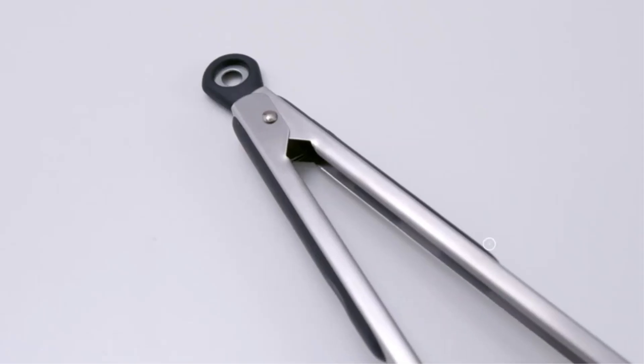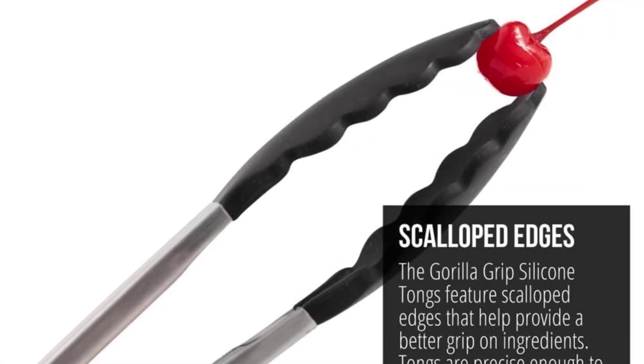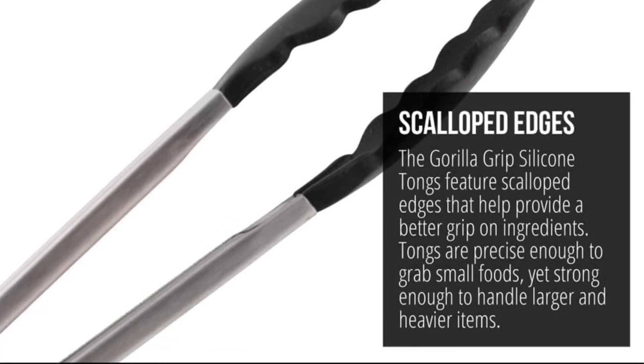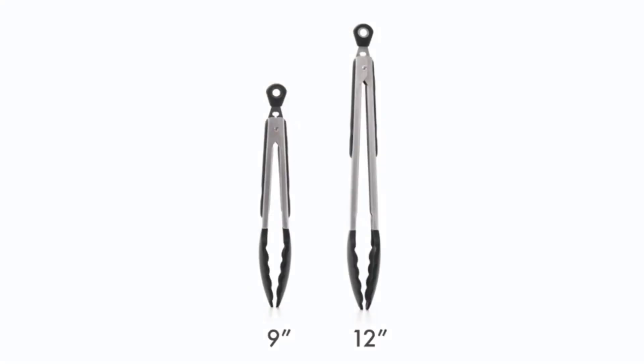Their silicone scalloped edges provide a strong and precise grab on all kinds of ingredients, while their heat-resistant silicone head makes them gentle on your non-stick cookware and heat-resistant up to 484 degrees Fahrenheit. Their slip-resistant grip with an ergonomic thumb rest ensures a comfortable and secure grip.